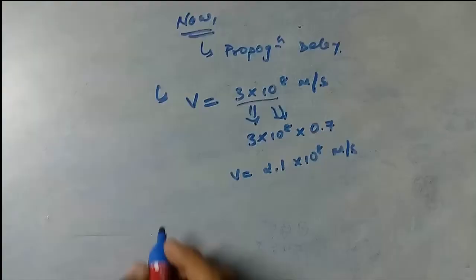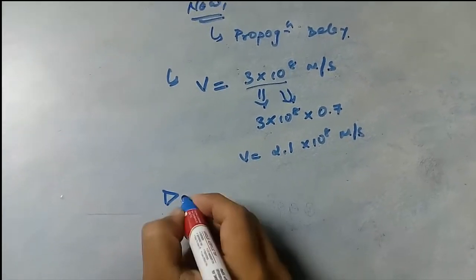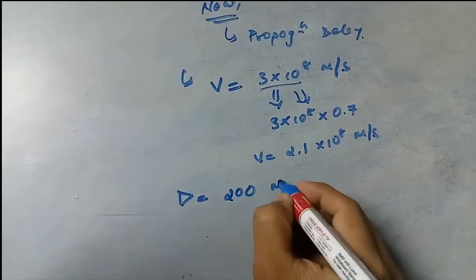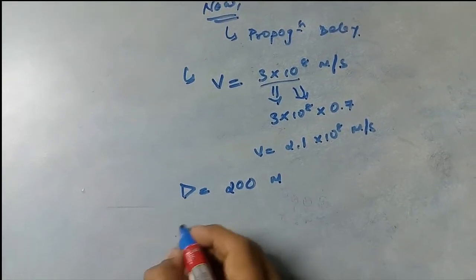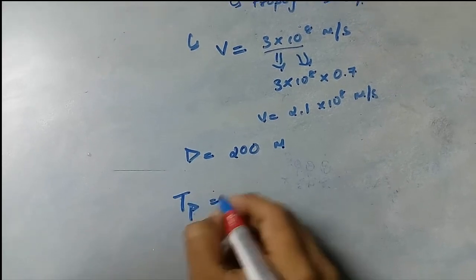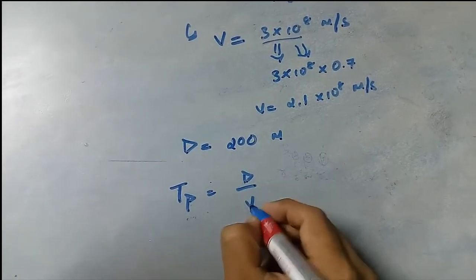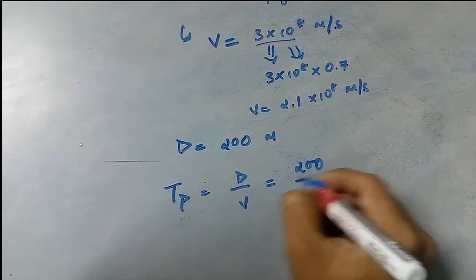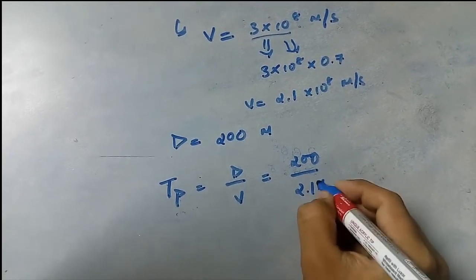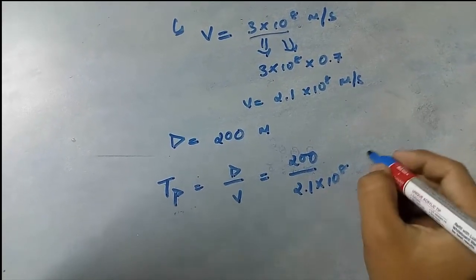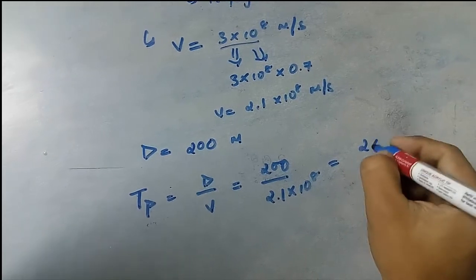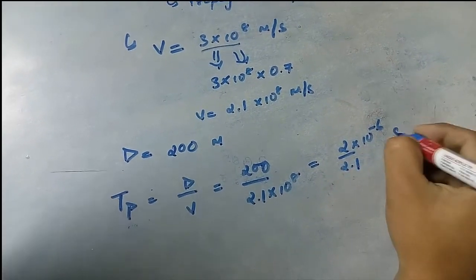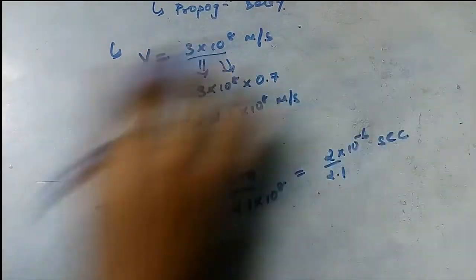Given that the distance between the sender and receiver is 200 meters, propagation delay equals distance divided by velocity: 200 meters divided by 2.1 into 10 raised to 8, giving an answer of 2 into 10 raised to minus 6 divided by 2.1 seconds.